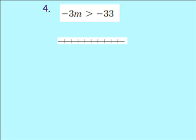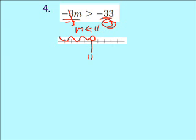Number four. Again, we're going to divide by a negative. It doesn't matter what the number is already there, but we're dividing by negative three. So we got to flip the sign. These cancel. We get M. And then we got to flip it. It's going to be less than. And then negative 33 divided by negative three is 11. So 11 becomes our key number. It gets an open circle. And we graph going to the left.